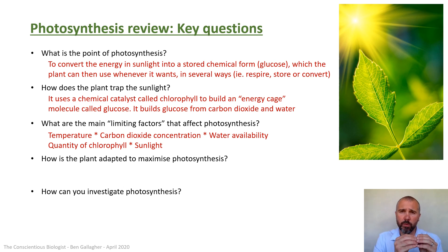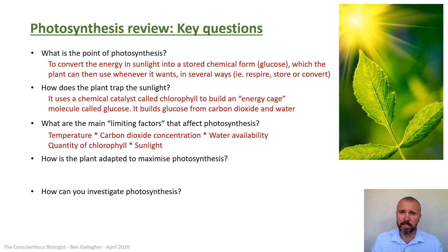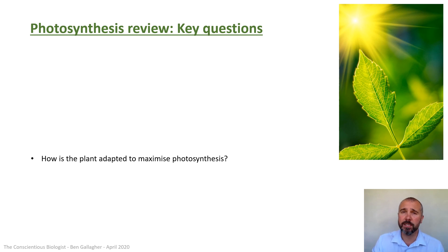The main limiting factors for photosynthesis are temperature — go back and review collision theory on that. Carbon dioxide and water availability are obviously massive factors because they're the two necessary reactants. Chlorophyll is the catalyst; the more you have, the faster photosynthesis occurs. And of course sunlight intensity and availability will also speed up the reaction. This presentation mainly focuses on how the plant is adapted to maximize photosynthesis.